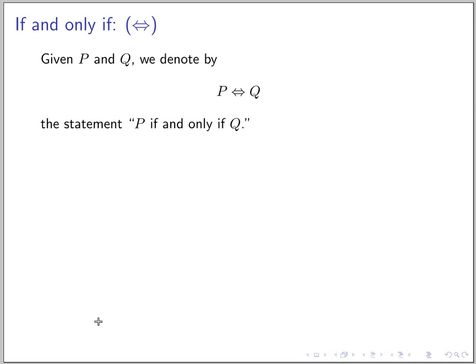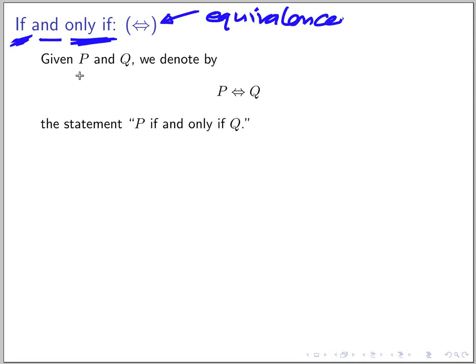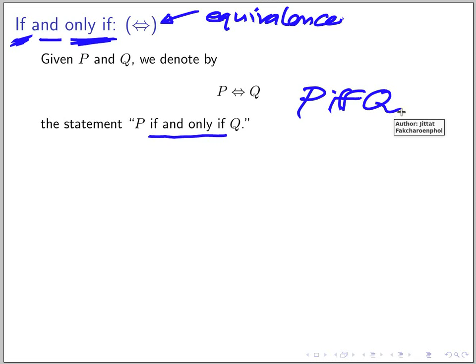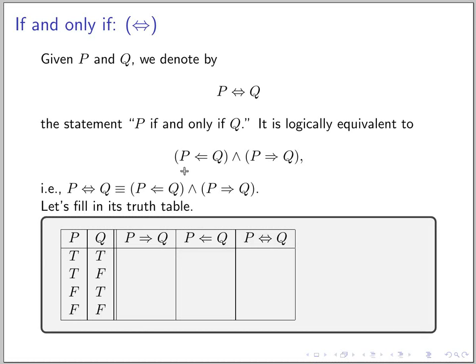Now let's go a bit further about implications. We have 'if P then Q,' and we can also say 'P only if Q.' If we combine both, we get the biconditional, denoted P if and only if Q — sometimes written as P iff Q. This literally means P if Q and P only if Q joined together.